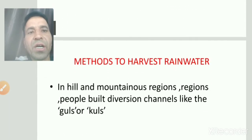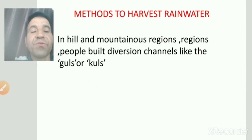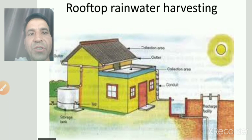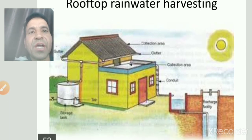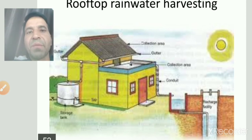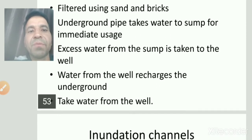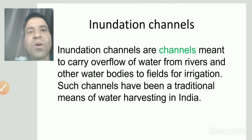Rainwater को store करने के methods: hill regions में लोग diversion channels बनाते हैं जिन्हें 'guls' कहते हैं। हमारे देश में सबसे ज़्यादा roof water harvesting system use होता है। Picture से easily समझ आएगा — roof water harvesting करके tanks या kund बनाते हैं। PVC pipes, water filter, kankar, और underground pipes use होते हैं, जिससे groundwater recharge होता है।